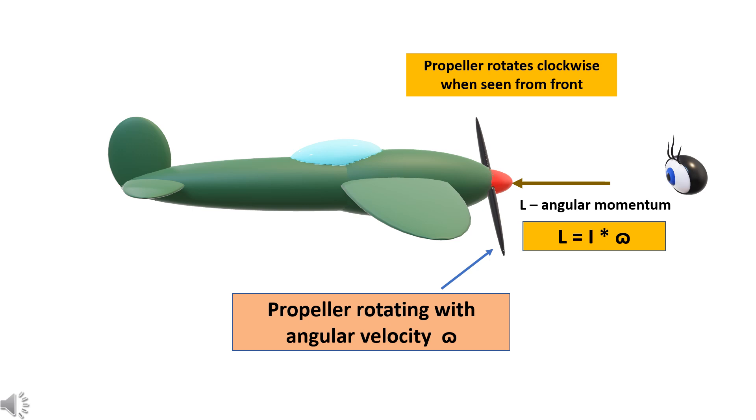If we consider the propeller to rotate clockwise when viewed from front, then the angular momentum vector is given by the right-hand thumb rule.